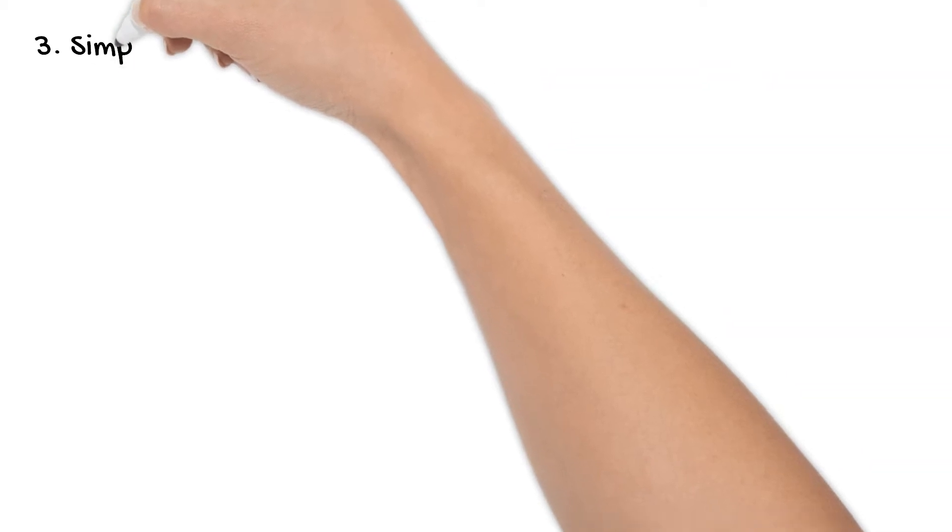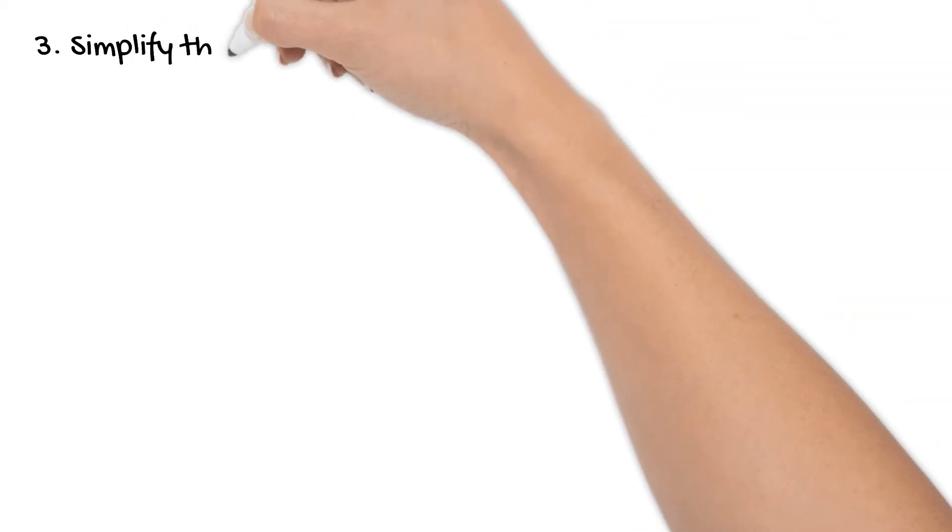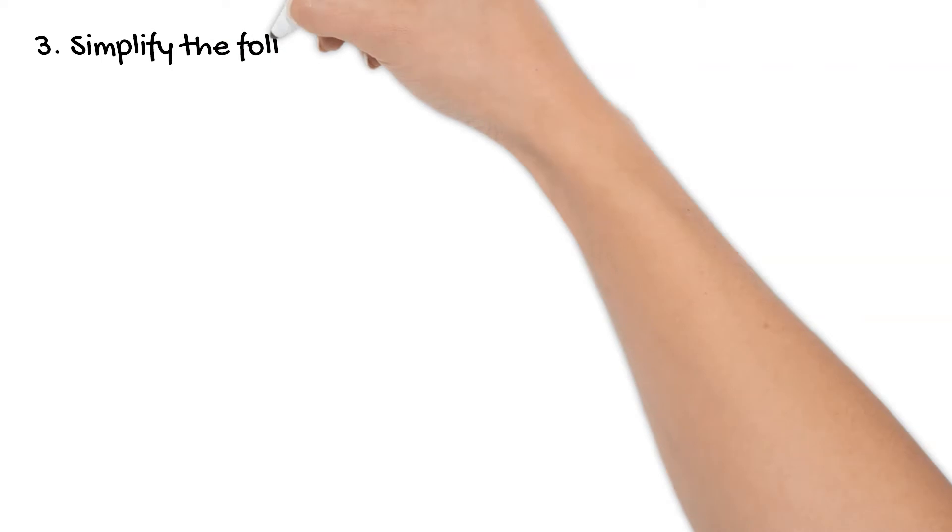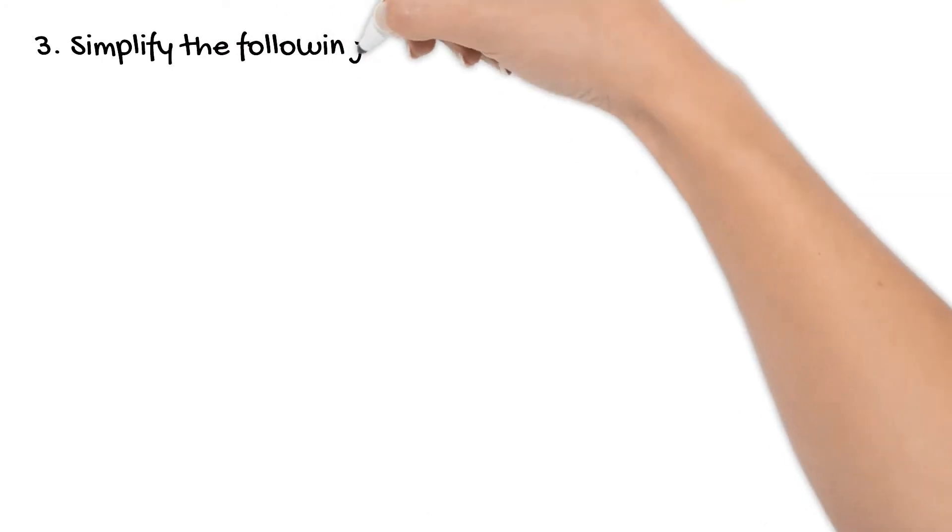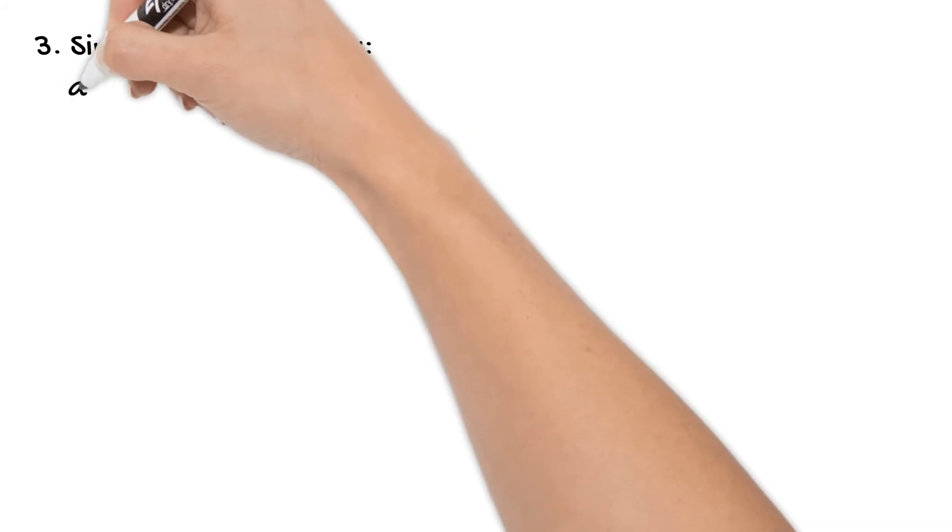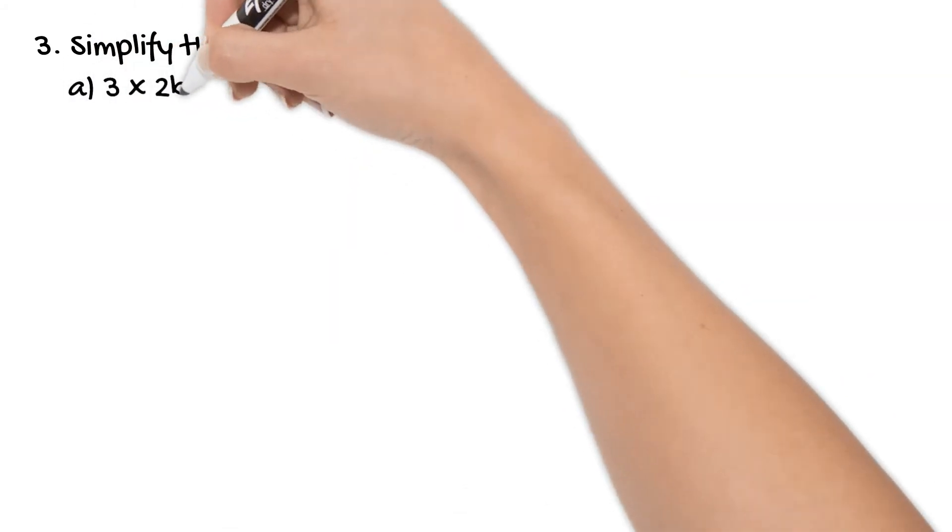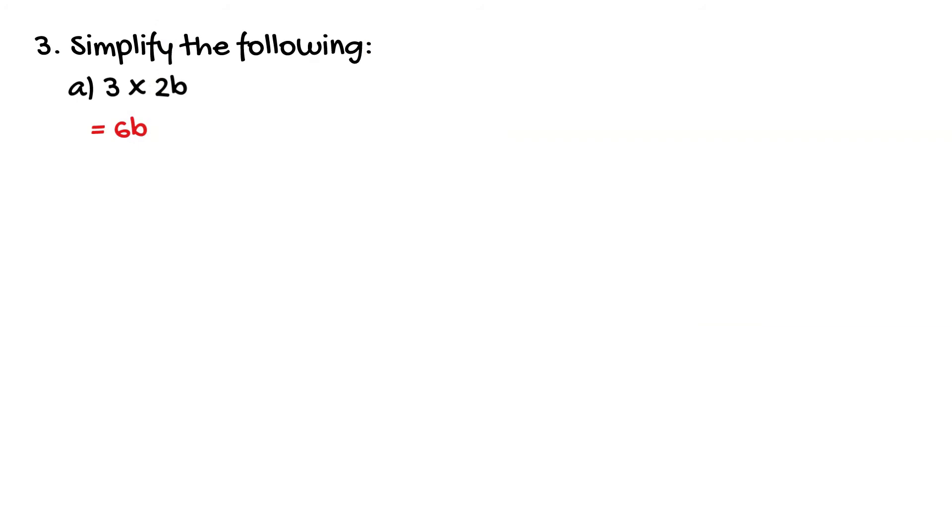Now we're being asked to simplify expressions. As I mentioned earlier simplified algebraic expressions don't include multiplication or division symbols. So our expression 3 times 2b we can multiply our numbers as normal. So we've got 3 times 2 is 6 and then multiplied by b of course is simply 6b.